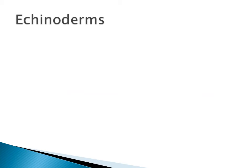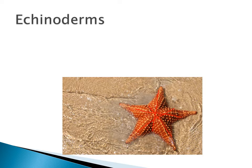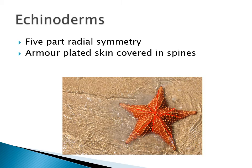A good example of an echinoderm is a starfish. If you look at a starfish, it has lots of lines of symmetry. In fact, it has five different lines of symmetry. This five-part radial symmetry is similar across other echinoderms.